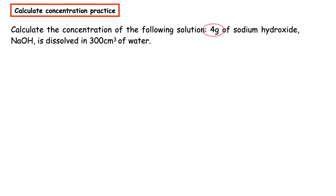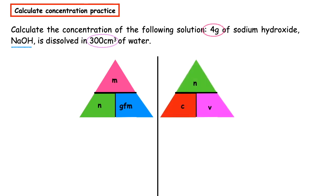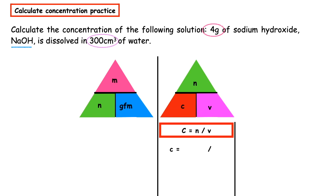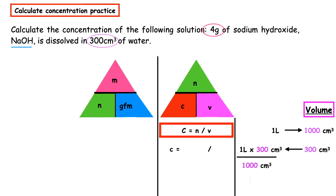This question wants us to calculate the concentration of the following solution: 4 grams of sodium hydroxide (formula NaOH) dissolved in 300 centimeters cubed of water. Remember 'my nice granny never cuts violets'. The question wants us to calculate the concentration, so we write c = n ÷ v. We haven't been given the number of moles, but we have 300 centimeters cubed, which must be converted: one liter equals 1000 centimeters cubed — 300 divided by 1000 gives us 0.3 liters.